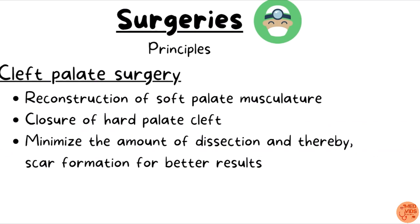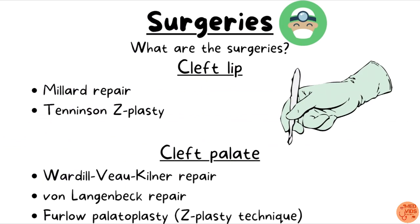Regarding principles of cleft palate surgery: if there is a soft palate defect, the soft palate musculature is reconstructed, followed by closure of the hard palate cleft at a later stage (15 to 18 months) — making it a two-stage procedure. The main principle is to minimize the amount of dissection as much as possible to minimize scar formation and achieve better results. Surgeries for cleft lip include Millard repair or Tennison-Randall Z-plasty. For cleft palate: Wardill-Kilner repair, von Langenbeck repair, Furlow palatoplasty (also called Z-plasty technique).